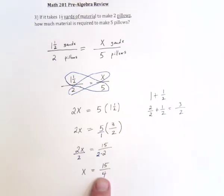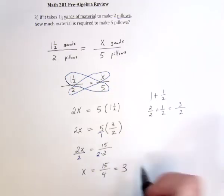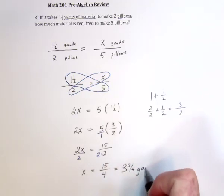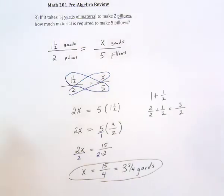So 15 fourths of a yard, 15 fourths. Well, let's see, a four won't divide into a 15, but if I make this a mixed number, four will go into it three times. That would make a 12. That means the remainder is three. So it's three and three quarters yards. Three and three quarters yards of material.